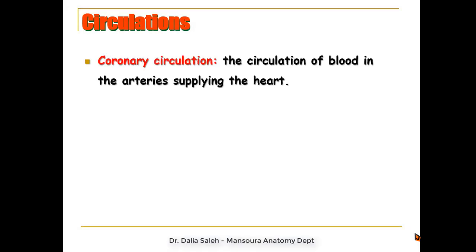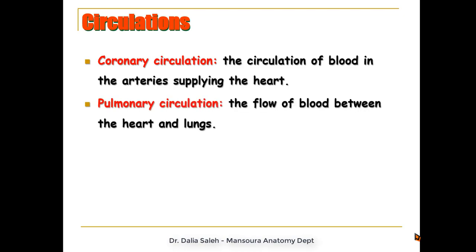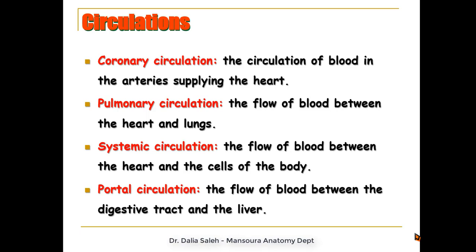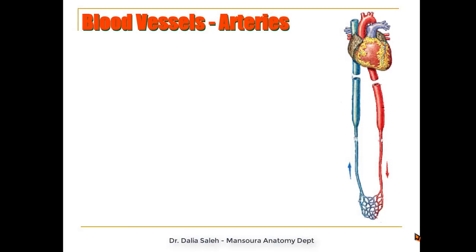We have many types of circulations in the body: the coronary circulation, which is the circulation of blood within the heart supplying the heart itself; the pulmonary circulation, which represents the flow of blood between the heart and the lungs for oxygenation; the systemic circulation, which is the flow of blood between the heart and every cell in our body to provide nutrition; and the portal circulation, which is the flow of blood between the digestive tract and the liver.